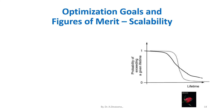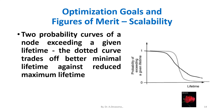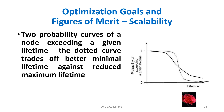For the first goal, we can assign two probability curves of a node exceeding a given lifetime. The dotted curve trades better minimum lifetime against reduced maximum lifetime.